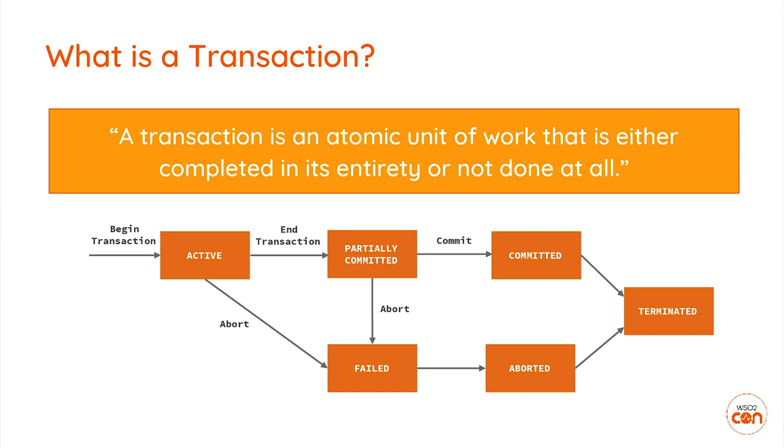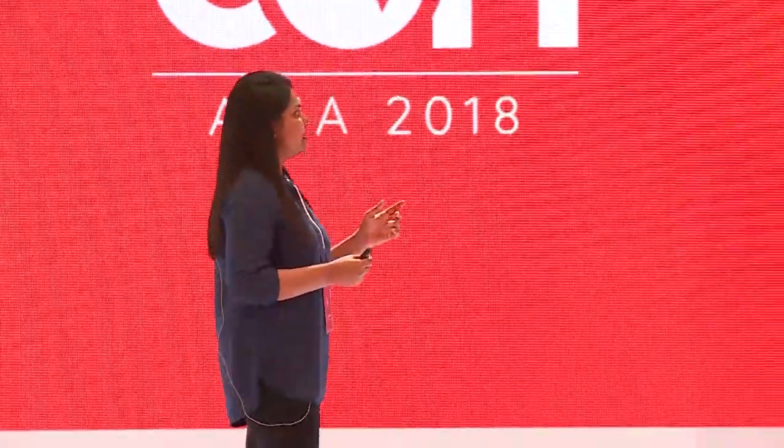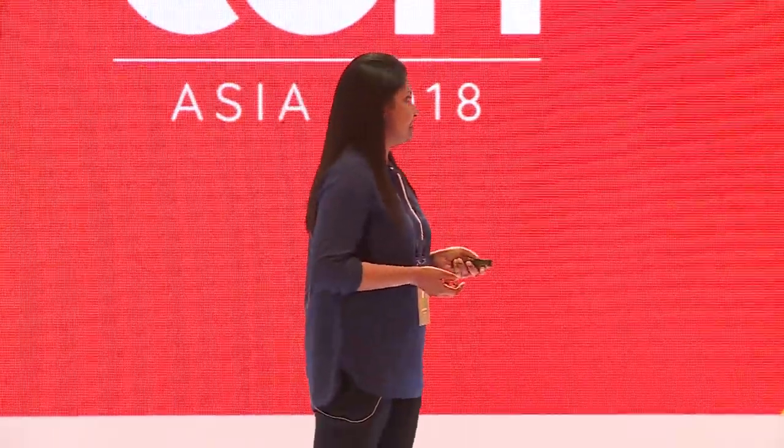During its execution, a transaction will go through different phases or states. When a transaction is started it will be in the active state, where actual writes to the database or message queues happen. If all operations are successful, the transaction goes through the partially committed state and finally gets committed. If some operations fail, the transaction is failed, goes to the aborted state, and finally to the terminated state.